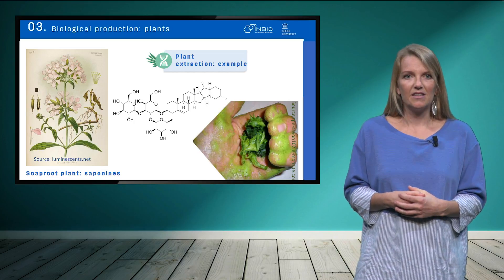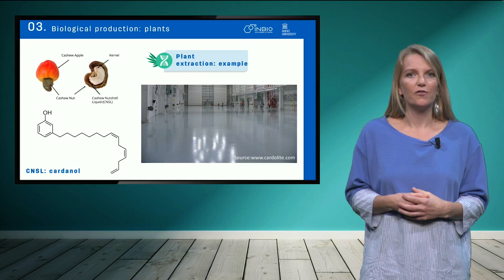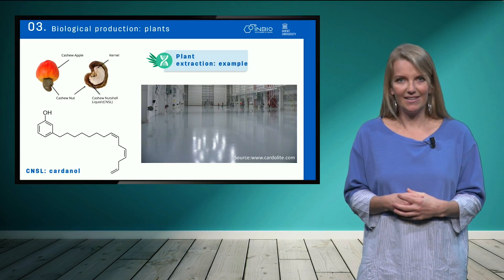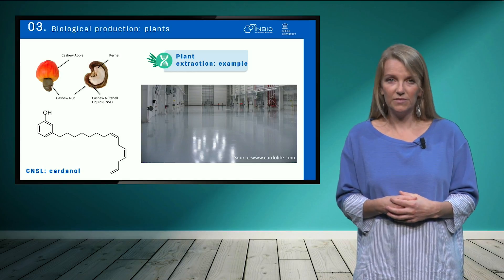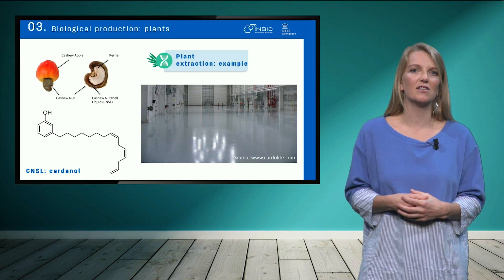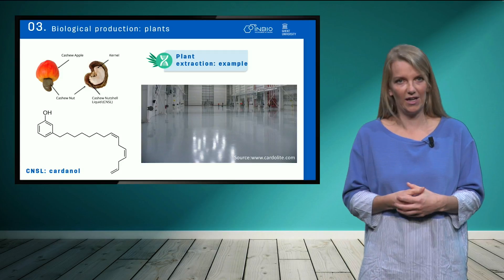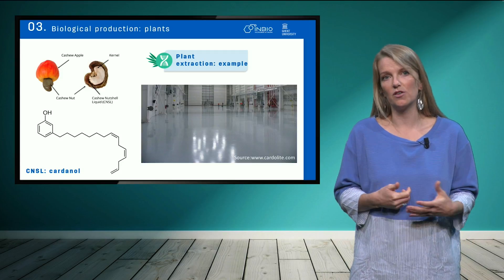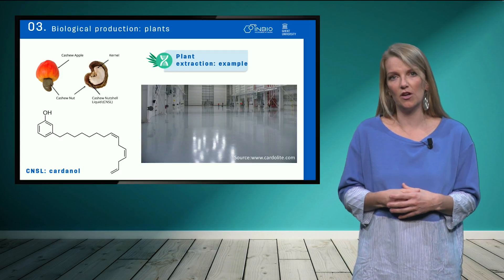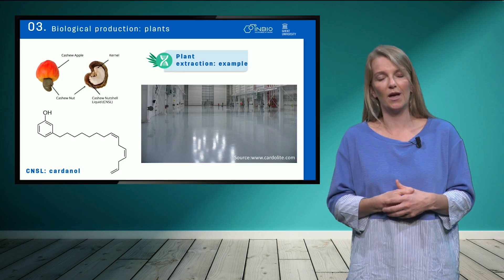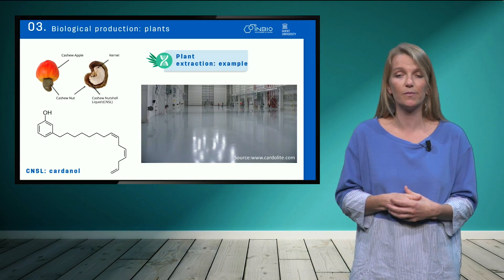A second example of a biosurfactant produced by plants is cardanol. This surfactant is extracted from the shell of cashew nuts, and is used amongst others in curing products to produce epoxy floors.